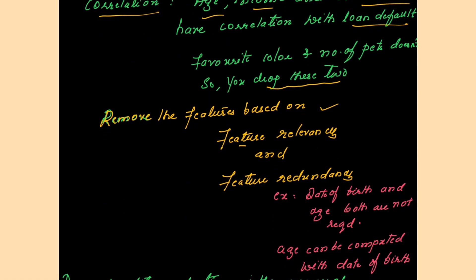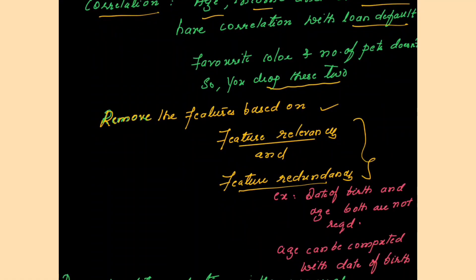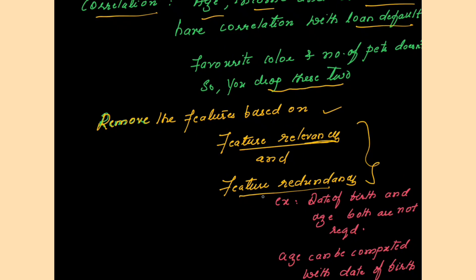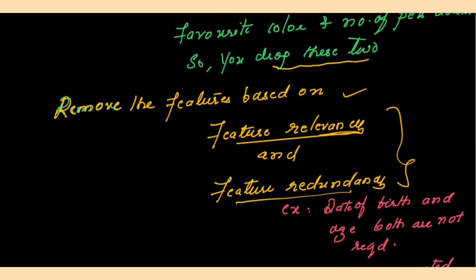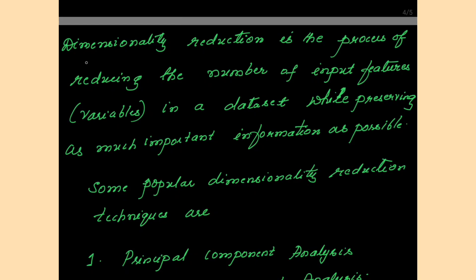You are removing features based on feature relevancy and feature redundancy. Feature relevancy: number of pets and favorite color are not relevant to the task, so you delete them based on the feature relevancy criterion. Feature redundancy: some attributes repeat or convey the same information. For example, date of birth and age — both are not required, since age can be computed from date of birth, so one can be removed.